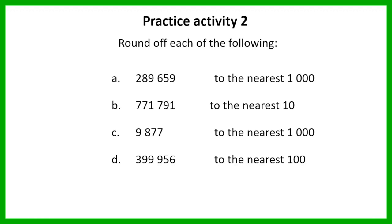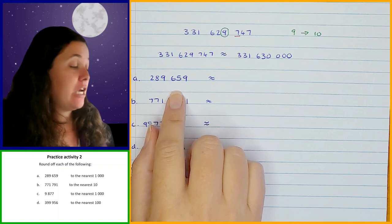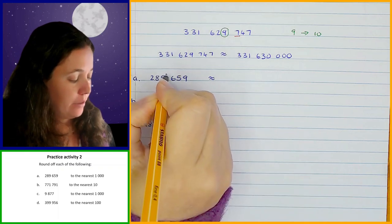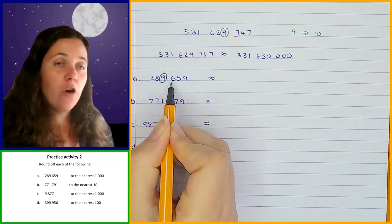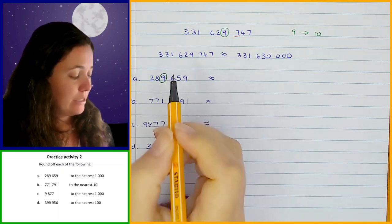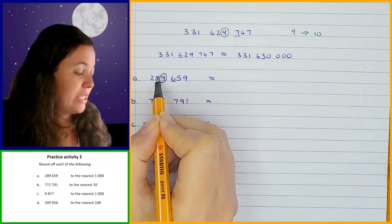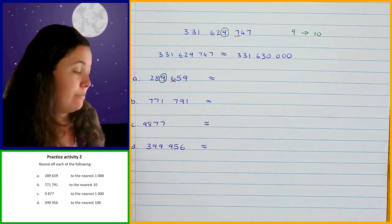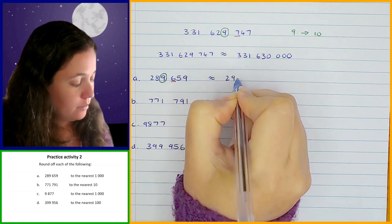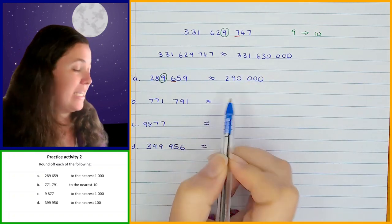Let's go through each of those. The first one: we have to round off to the nearest thousand. The digit in the thousandth position is the nine. The digit straight after it is a six. Six is in the five or more category, so the nine goes up one — but when nine goes up one, it changes to 10. So the nine changes to zero and the digit in front, two, goes up one to three. So you should have got 290,000.